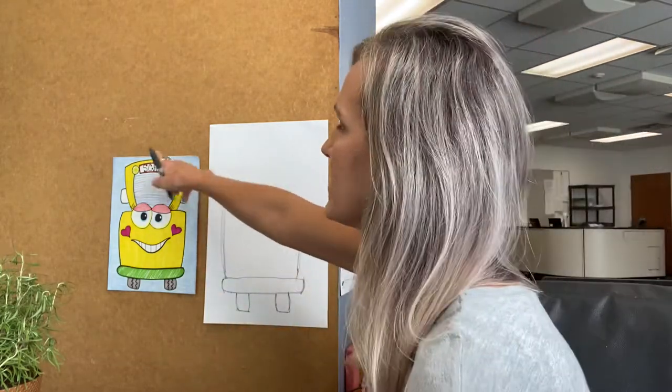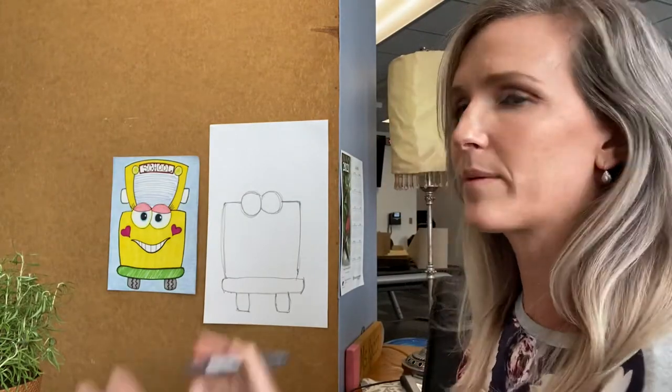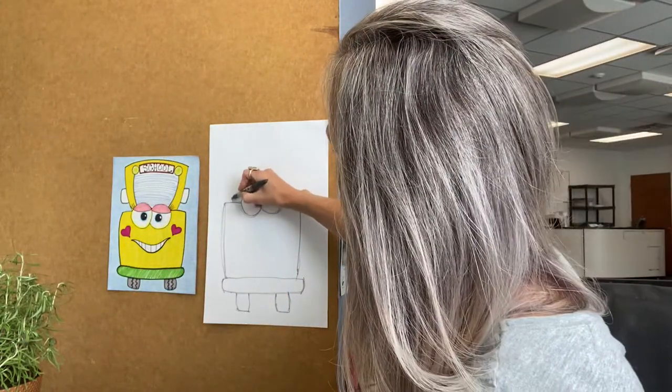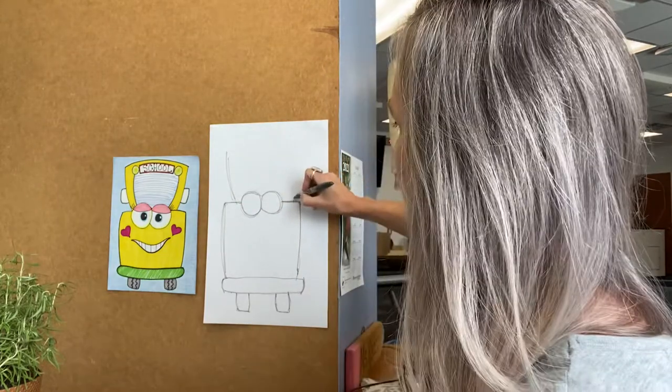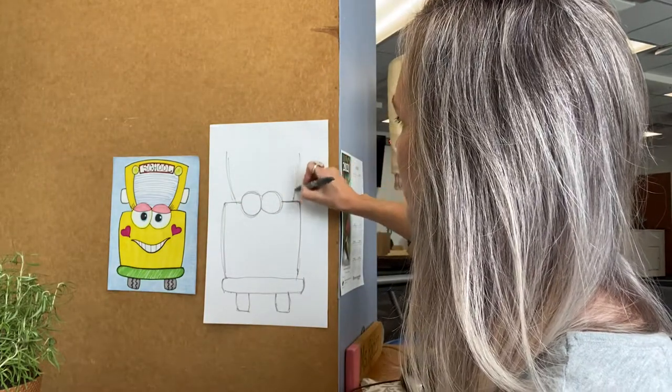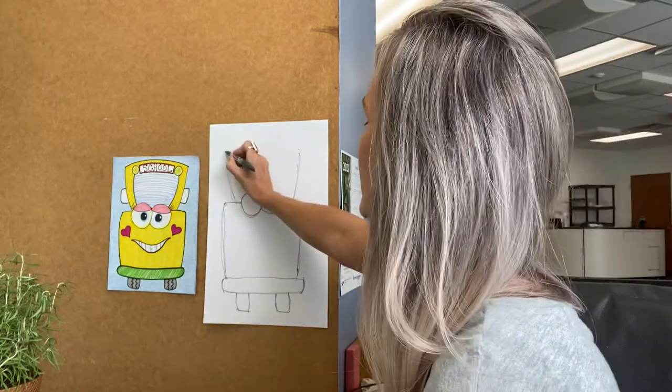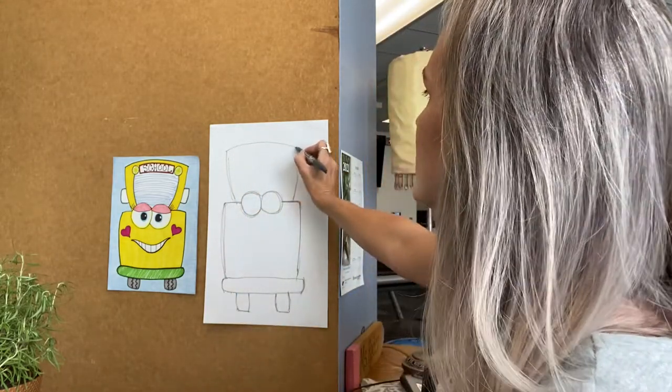And then we're going to go and add the top of the bus. It's another square but it kind of tapers down. So we're going to do a square shape but the sides kind of taper in a little bit at the bottom and the top is kind of rounded a little bit.